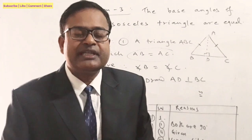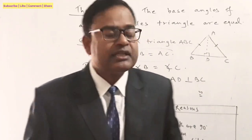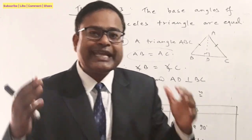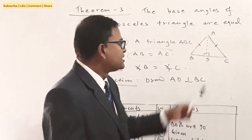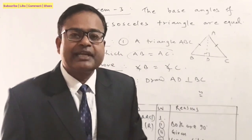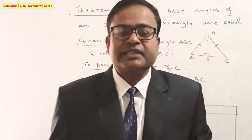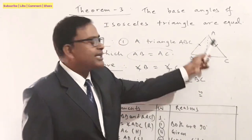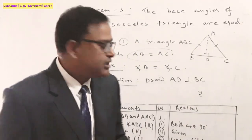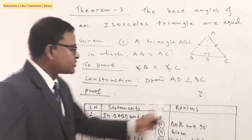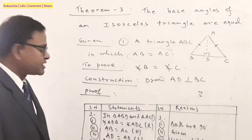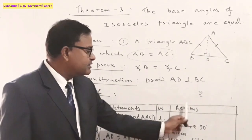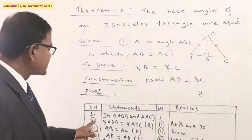After the construction, we now have two triangles: triangle ABD and triangle ACD. By showing these two triangles are congruent, we can easily show that angle B equals angle C. We set up a proof table with serial number, statements, and reasons.